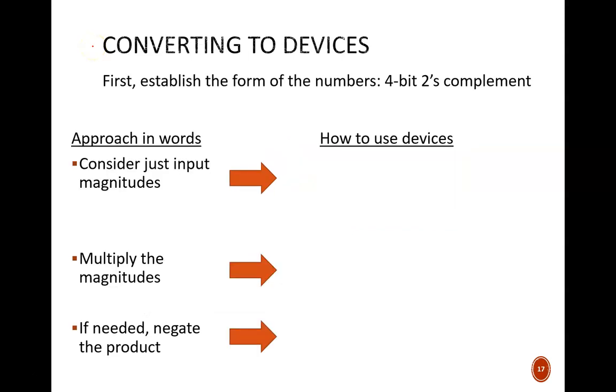To this point in our design, we haven't considered gates or circuits. We simply reviewed something we already knew implicitly and tried to explicitly identify the steps. Now let's talk binary and logic circuits. First, as always, we must define the form of the numbers. Here we will use inputs that are in 4-bit 2's complement form.